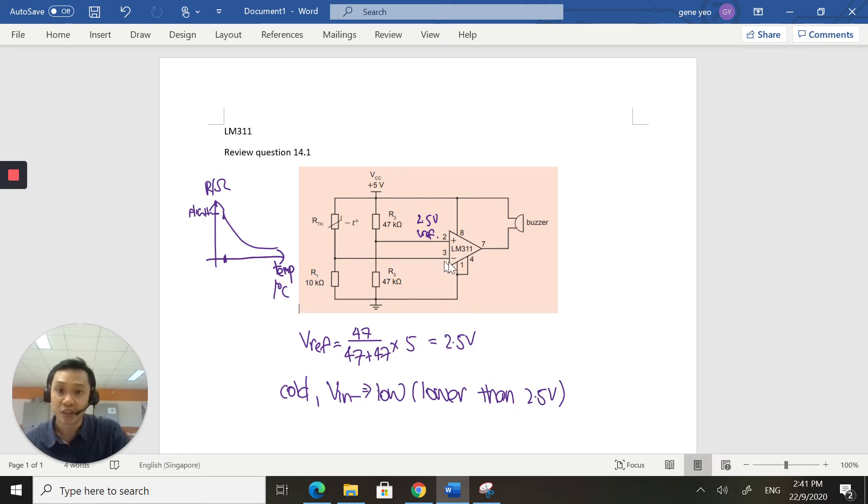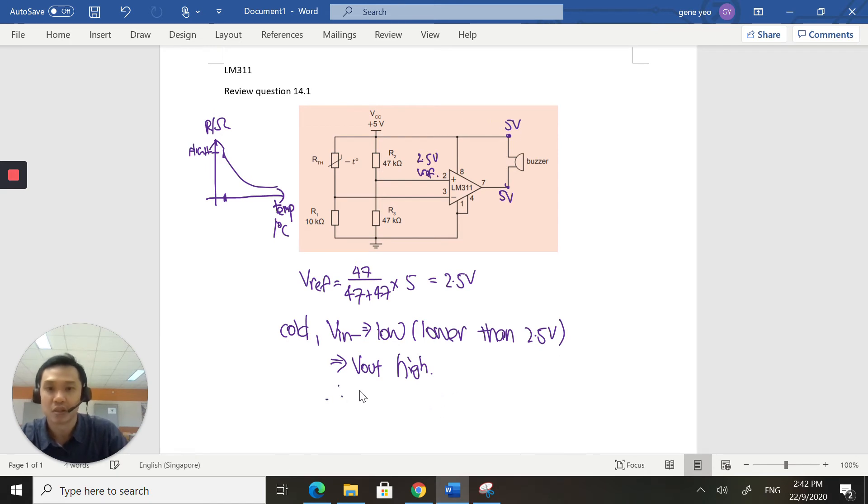So if the inverting is low and the non-inverting is high, this means that V_out goes high. V_out goes high, so this will be 5 volts. Now this end is also 5 volts. If this is 5 volts and this is 5 volts, there's not going to be any potential difference across the buzzer. Therefore, the buzzer will not buzz because there's no potential difference across it.